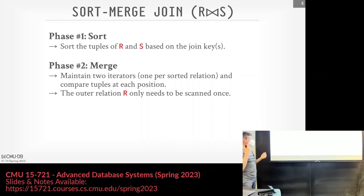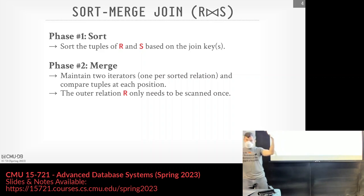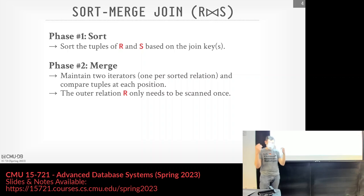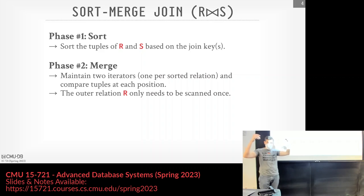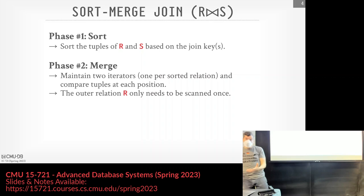The high-level idea: we have two tables R and S we want to join. First we sort them on the join keys, then we have a merge phase with two iterators walking through in lockstep, comparing whatever the two iterators are pointing at. Because we've sorted things ahead of time, the iterator on the outer relation will never have to backtrack — unlike a naive nested loop join where you do a sequential scan for every tuple on the outer relation.